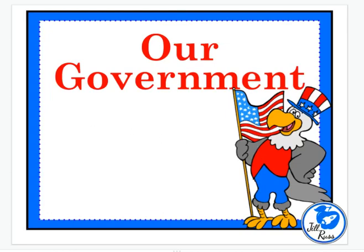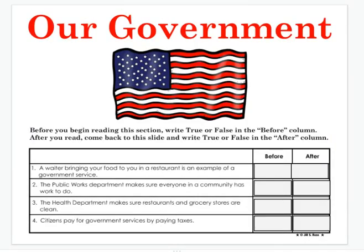Our government. Before you begin reading this section, write true or false in the before column. You're going to read the words and sentences and tell me true or false. Then after we read, we're going to come back to this slide and write true or false in the after column. Good readers make predictions before they read, and these are kind of predictions — seeing what you know and then figuring out what we learn after.